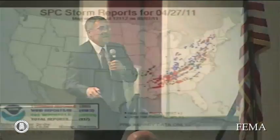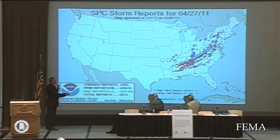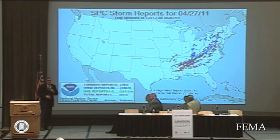This event was not confined to just Alabama, but the entire eastern United States. On this day, the red indicates tornado reports, and you can see that tornadoes occurred all the way up the east coast, all the way up into upper New York state on this day. So this was a major outbreak, with a lot of comparisons to the 1974 outbreak.